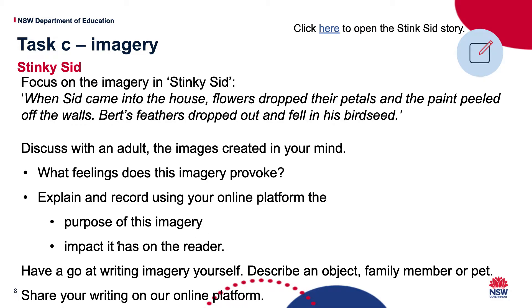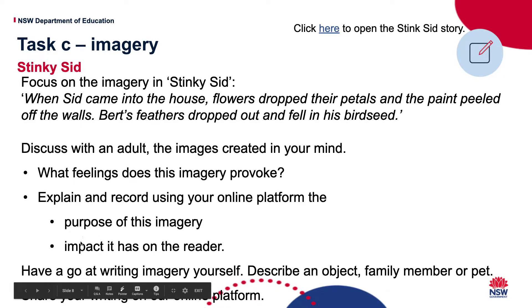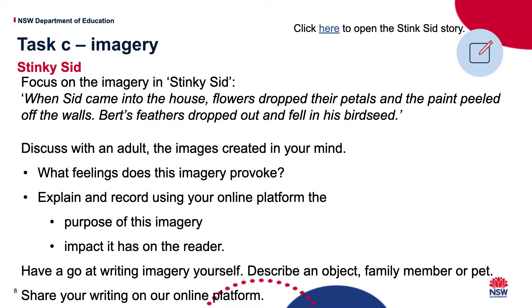Then explain and record the purpose - so why did they say things this way? Think about why the author might have said things like this. And the impact - that's again about your feelings. Write why and how it makes you feel. Then have a go at writing imagery yourself. Maybe describe an object, a family member, or a pet. Talk about something you see or something you hear. Think of all the feelings that are happening when you're looking at something, and then put them into words.